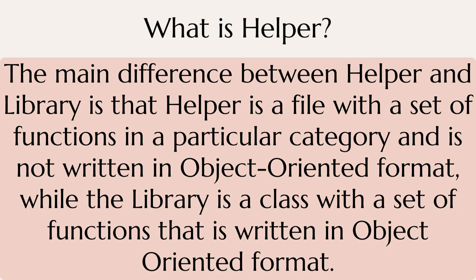The main difference between a helper and a library is that a helper is a file with a set of functions in a particular category and is not written in object-oriented format, while a library is a class with a set of functions that is written in object-oriented format.